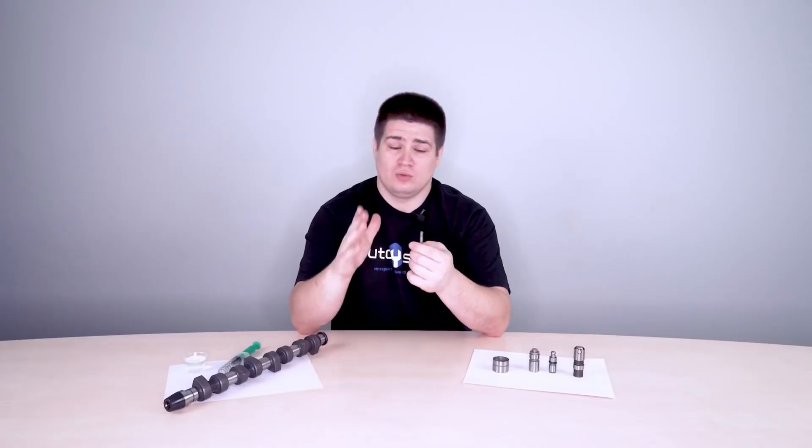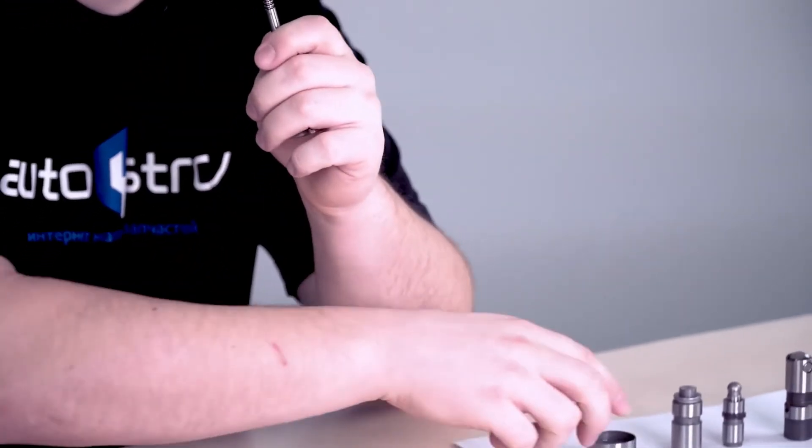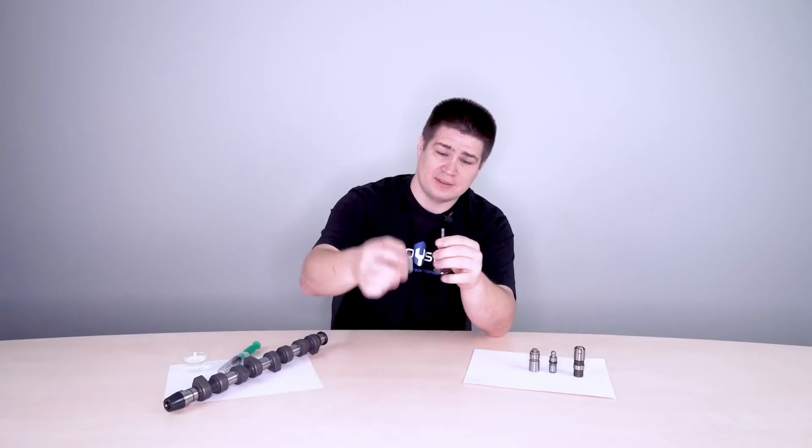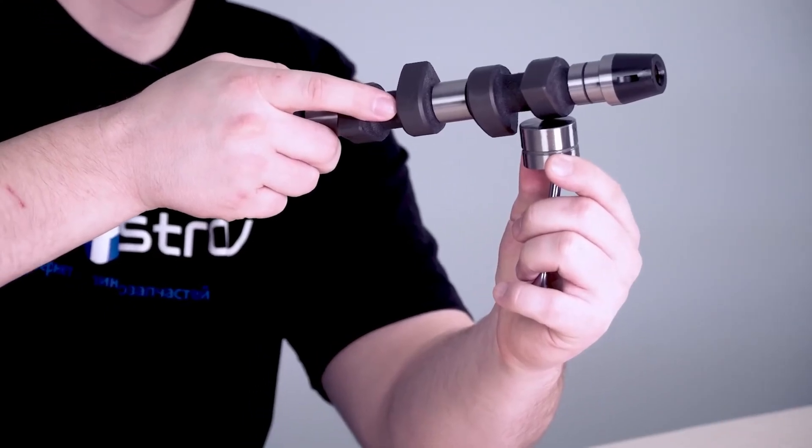Hydraulic lifters are installed directly between the valves and the camshaft cam. In most cases, it looks something like this. Here is the valve, then the hydraulic lifter, and lastly the camshaft.